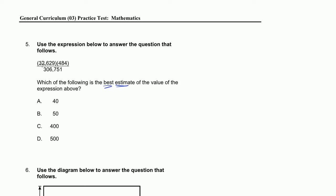So if I wanted to round this out at 32,629, I'd say that's approximately equal to 30,000 times, instead of 484, I'm going to say that's roughly equal to 500. And then divide that by 306,751. I'm going to say that's roughly equal to 300,000.